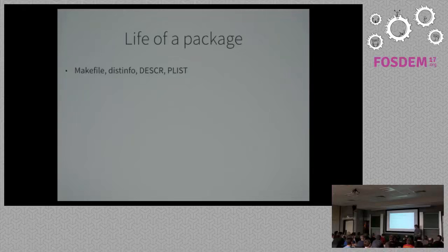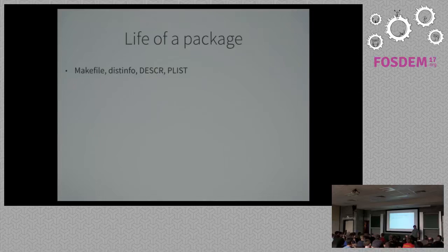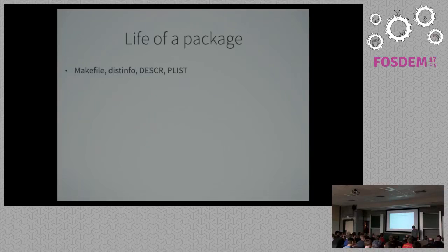Now let's go into a little more detail. A package in pkgsrc minimally needs four files: a Makefile, a distinfo, a description, and the PLIST — the packing list. The Makefile is essentially a bunch of variables that are declared, and then at the end you include one include line that does all the work. The distinfo is automatically generated and contains checksums for the files you're going to download. The description is something you need to write — one or two paragraphs describing the package. And the packing list is also auto-generated by the infrastructure and is basically a list of files in the package.